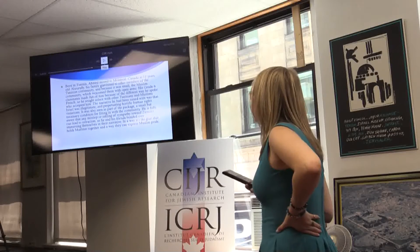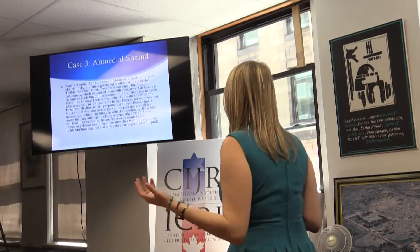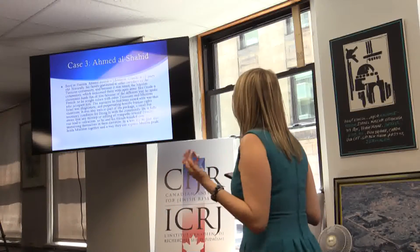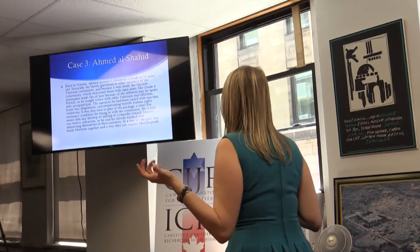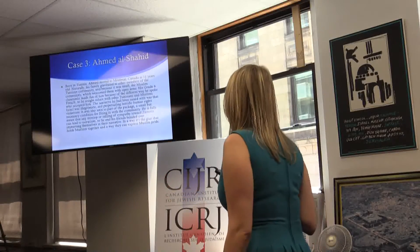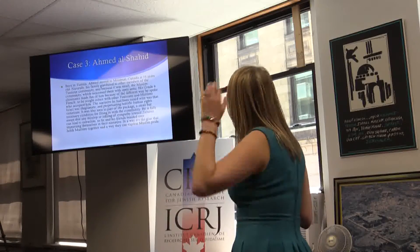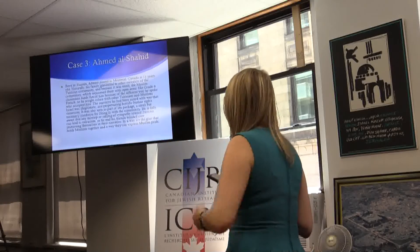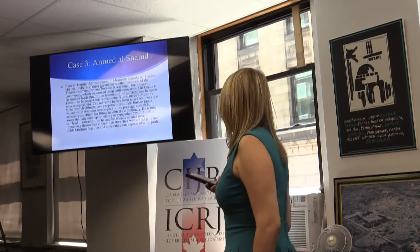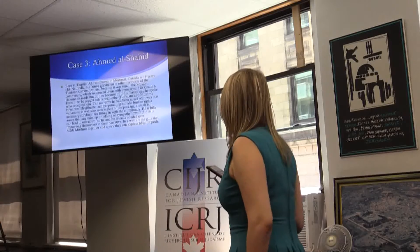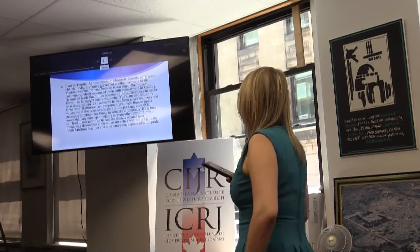Case Three: Ahmed Al-Shahid. Born in Tunisia, Ahmed moved to Montreal at 11 years old. His family gravitated to the Tunisian community, and because it was small, the Muslim community welcomed him. His grade-six classmates made fun of his accent, so he sought solace with other Tunisians and Muslims who accepted him. The narrative he was raised with was that Israel was illegitimate and perpetuating horrific human rights violations against Arabs. An inkling of sympathy towards Zionists could lead to ostracism, so he and his friends bonded over their shared narrative. In a way, it's the glue that holds that community together.